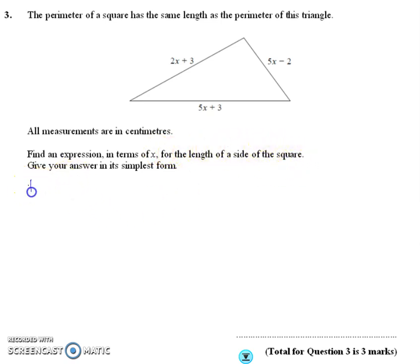so let's look at the triangle. The perimeter of the triangle is, I'm just going to add these up. So 2x plus 3, and then add on this side, plus 5x minus 2. Then add on the final side, plus 5x plus 3.